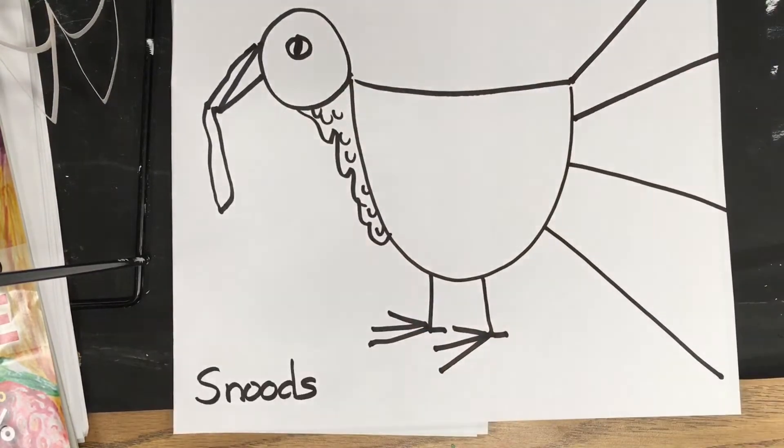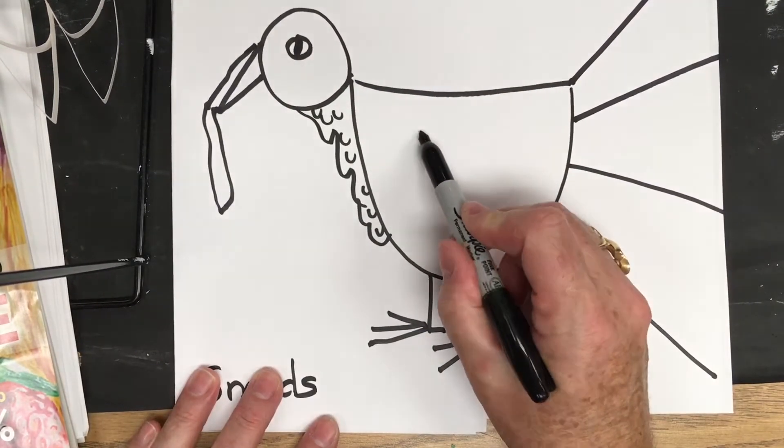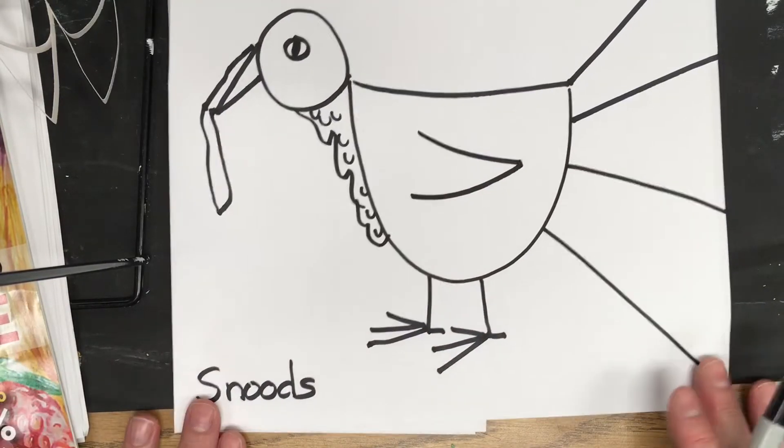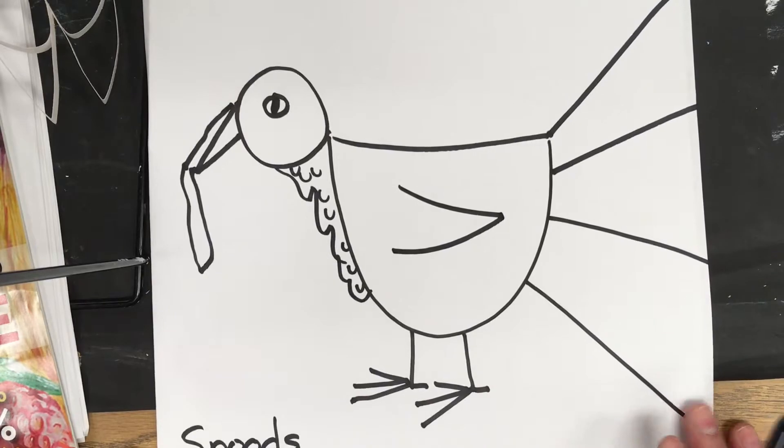And now, if you want to add a wing, you can put a wing in here. Like that. And that's how you make a very simple turkey.